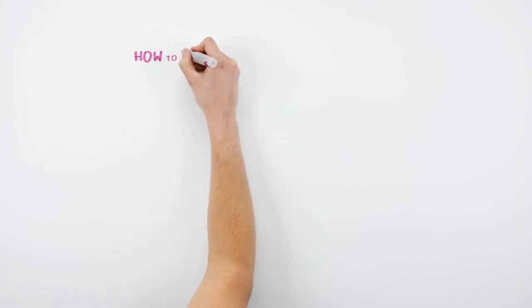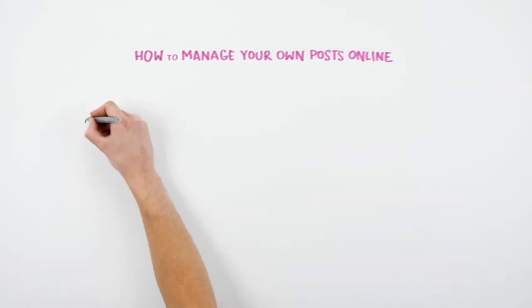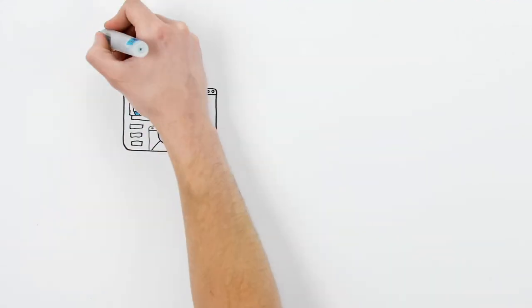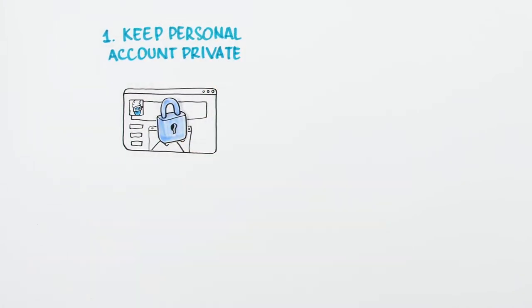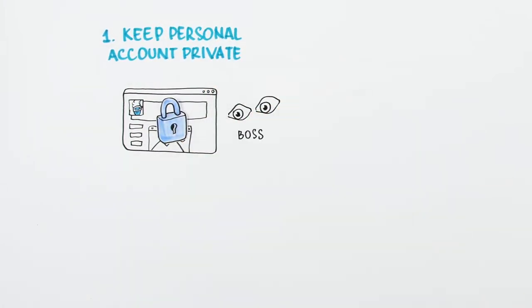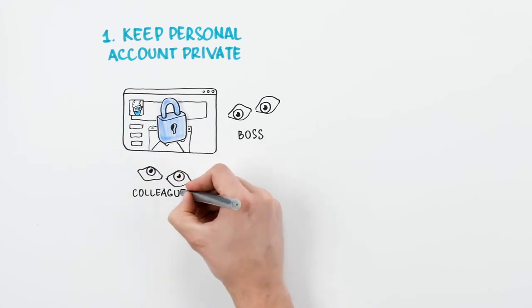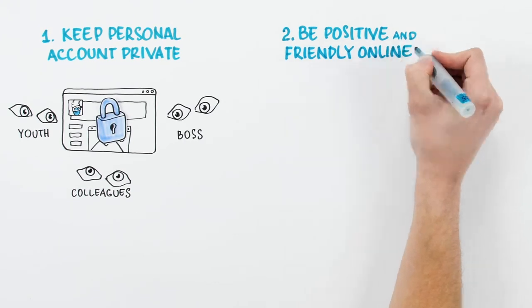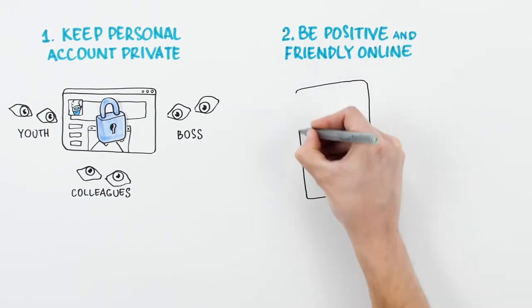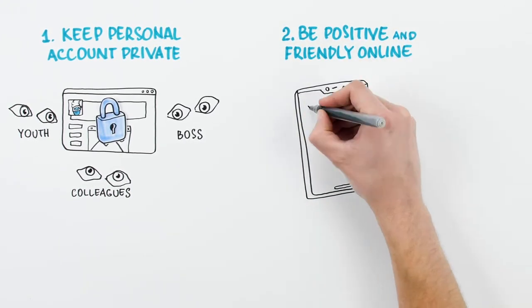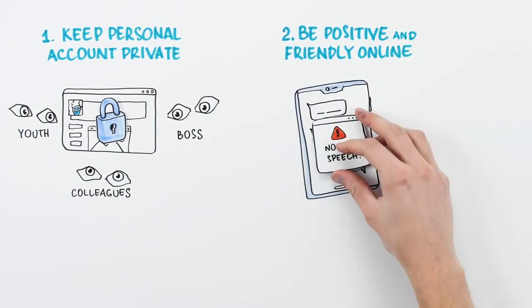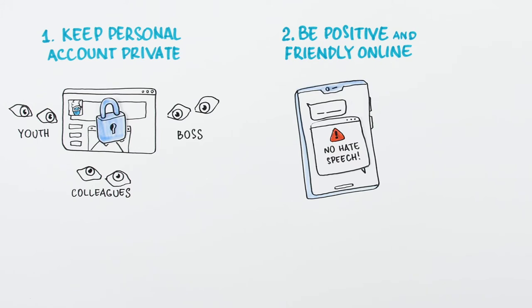Here are a few things you can do to manage your own posts online. Keep your personal social media accounts private, as the internet has a long memory. Make sure any posts you make public are things you'd be happy for your boss, colleagues or young people to see. Be positive and friendly online. Avoid gossiping or bad-mouthing people. Consider the cyberbullying and hate speech policies and procedures you would address with young people. They also apply to you.